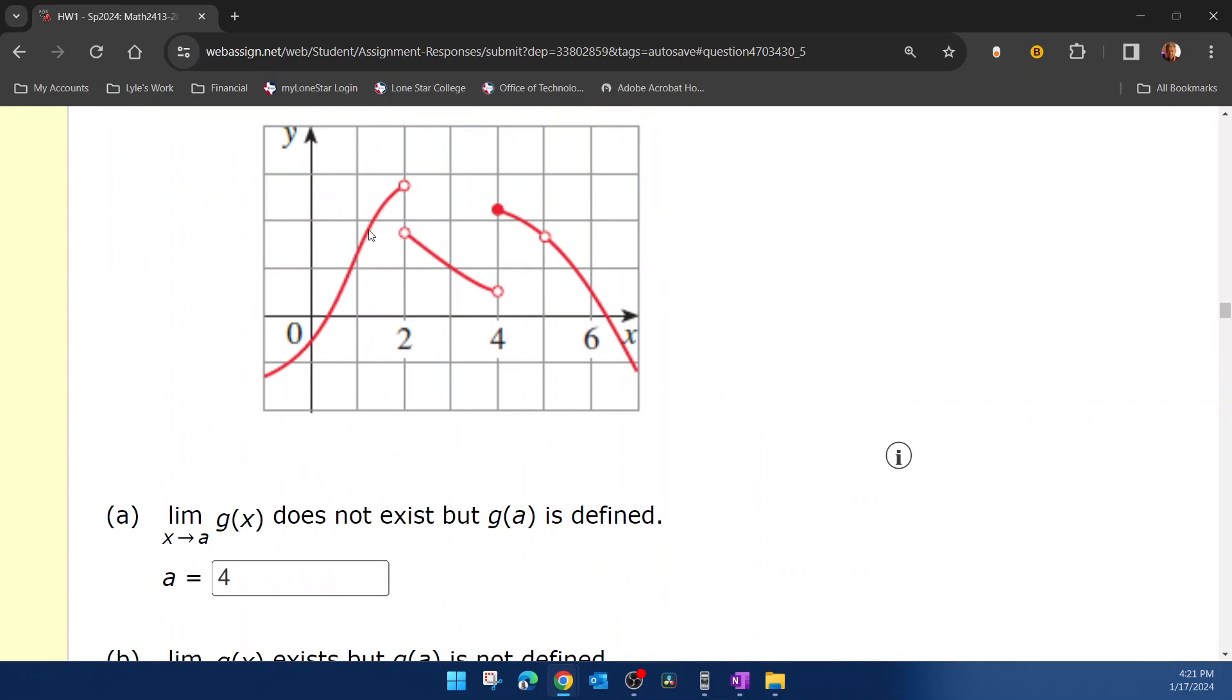The limit, remember, has nothing to do with what the function is doing at that point. So f of 2 does not have to be defined for the limit as x approaches 2 from the left or the right to be defined.